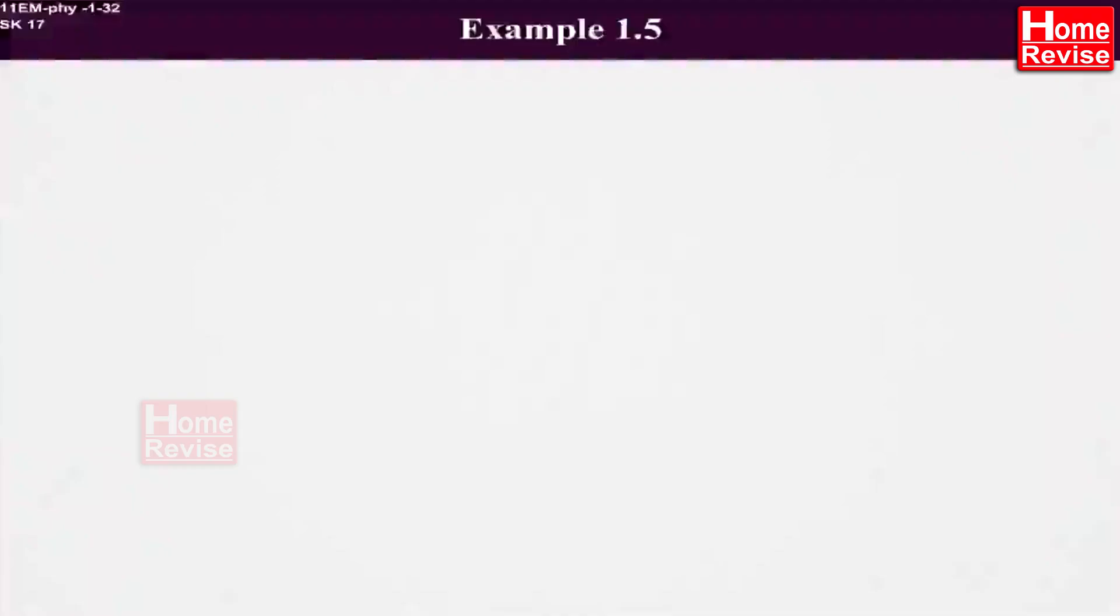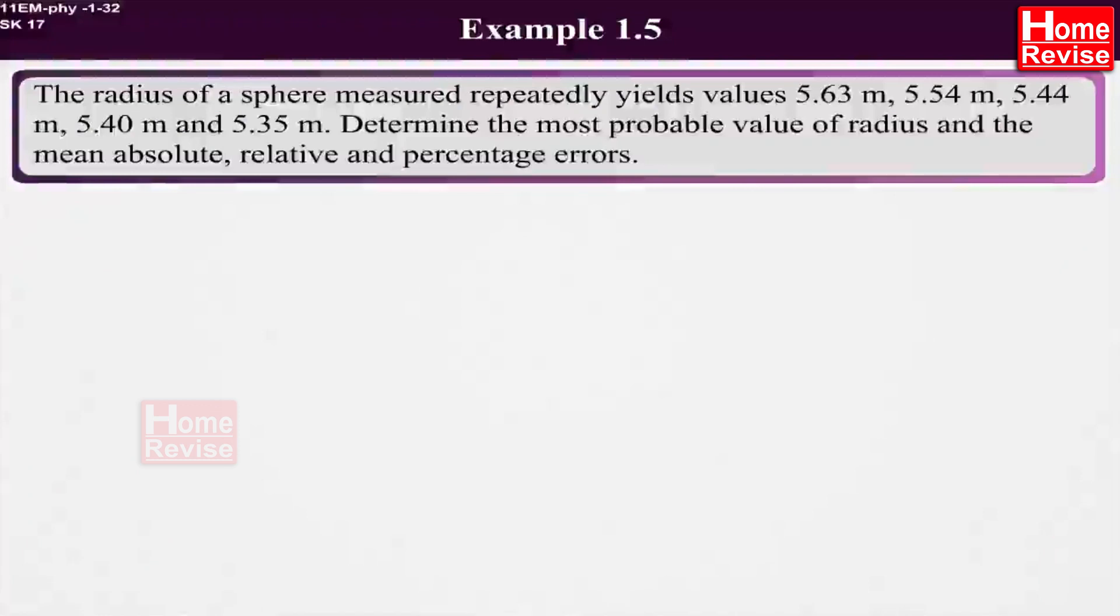Example 1.5: The radius of a sphere measured repeatedly yields values 5.63 m, 5.54 m, 5.44 m, 5.40 m and 5.35 m. Determine the most probable value of radius and the mean absolute, relative and percentage errors.